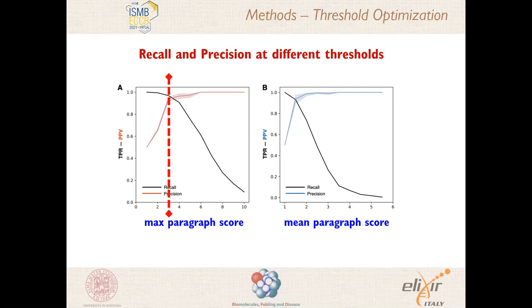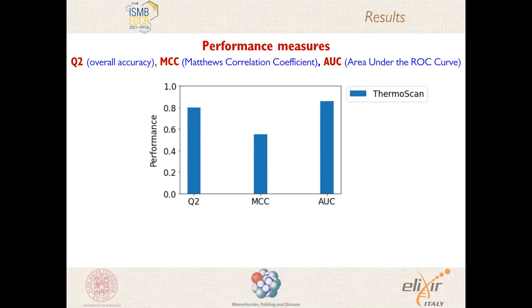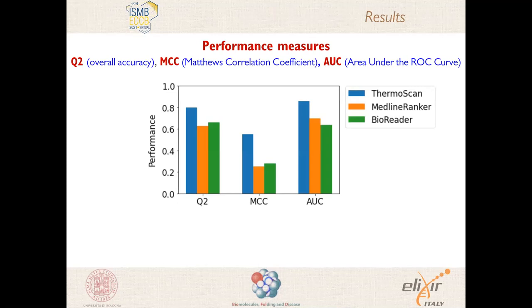In the next slide we show some of the performance measures calculated for ThermoScan given the optimized threshold: namely the overall accuracy, the Matthews correlation coefficient, and the area under the ROC curve. You can see that these performance values score relatively high for ThermoScan. For comparison, on the same testing sets we applied two other text mining methods, namely MedlineRanker and BioReader. They both scored lower than ThermoScan; in particular, the Matthews correlation coefficient scored on average two-fold higher for ThermoScan than for the other two methods.